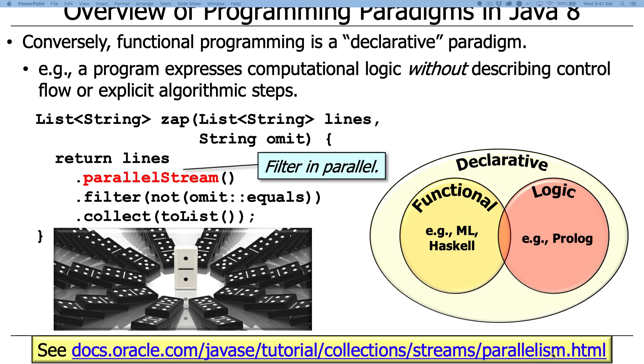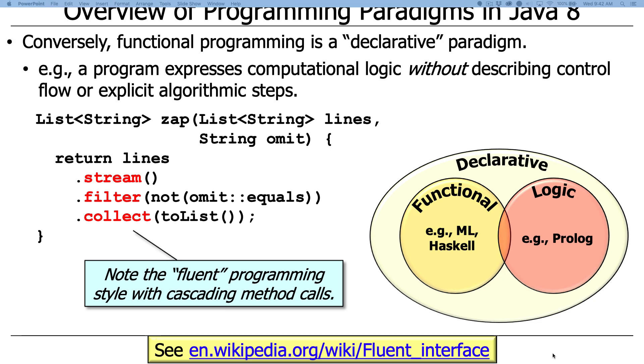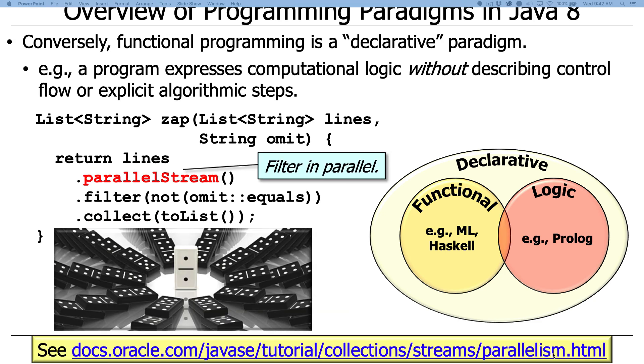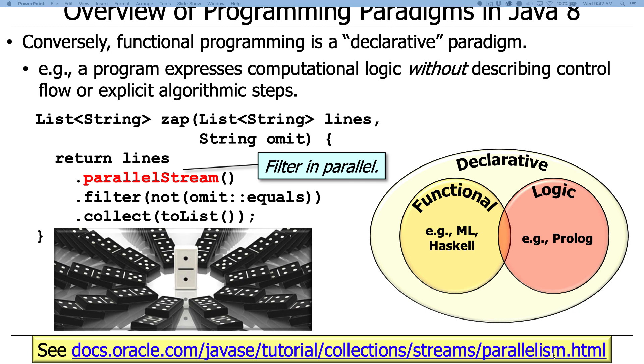The other thing to note is we can trivially convert this from sequential, which is what we had here, to parallel by just changing stream to parallel stream. That's the real beauty of the functional approach. By focusing on the what, not the how, we can make these radical changes in performance. We're now doing the filtering in parallel with only minuscule changes in the code. The reason why we could do that is because two things. Number one, it was declarative. We said what, not how. So going from stream to parallel stream lets the implementation figure out the how, not us. Number two, these sets of operations are so-called stateless. They don't actually maintain state. They just work on the input and the output flowing through the stream.